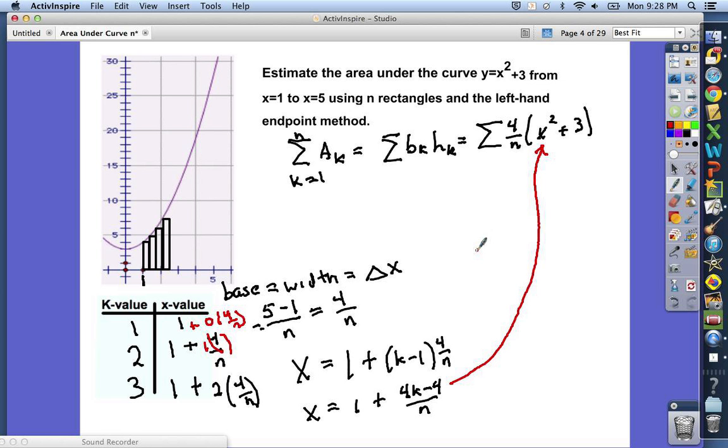So that would be the setup, using n rectangles in the left-hand endpoint method, or LRAM, for x equals 1 to 5 of x squared plus 3.